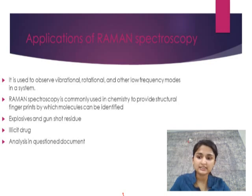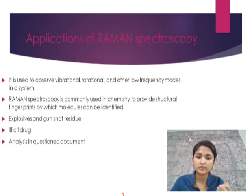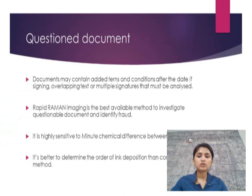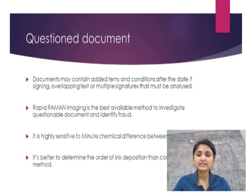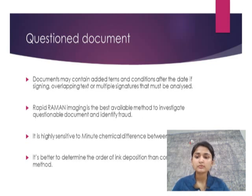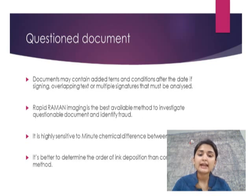Raman spectroscopy can also analyze illicit drugs and the constituents of illicit drugs. The next application is analysis of questioned documents, which is the main application we are covering. A questioned document is anything whose authenticity is in doubt. Documents may contain added terms and conditions after the date of signing, overlapping text, and multiple signatures — all of which can be analyzed through Raman spectroscopy. Rapid Raman imaging is the best available method to investigate questionable documents and identify fraud.